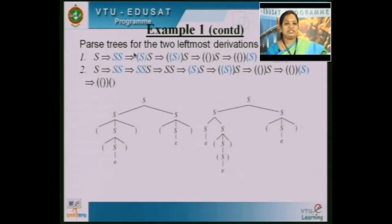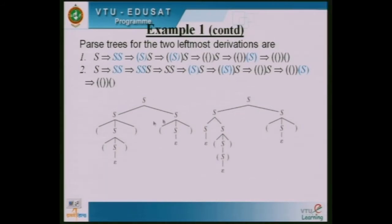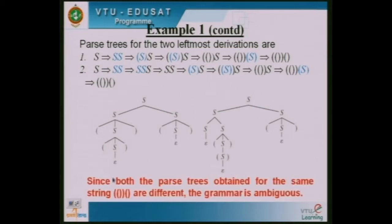When you compare these two derivations, are they the same or different? Yes, they are different. Since both parse trees obtained for the same string are different, the grammar is ambiguous. This is one example where we obtained two leftmost derivations producing two parse trees which are different, leading to ambiguity.